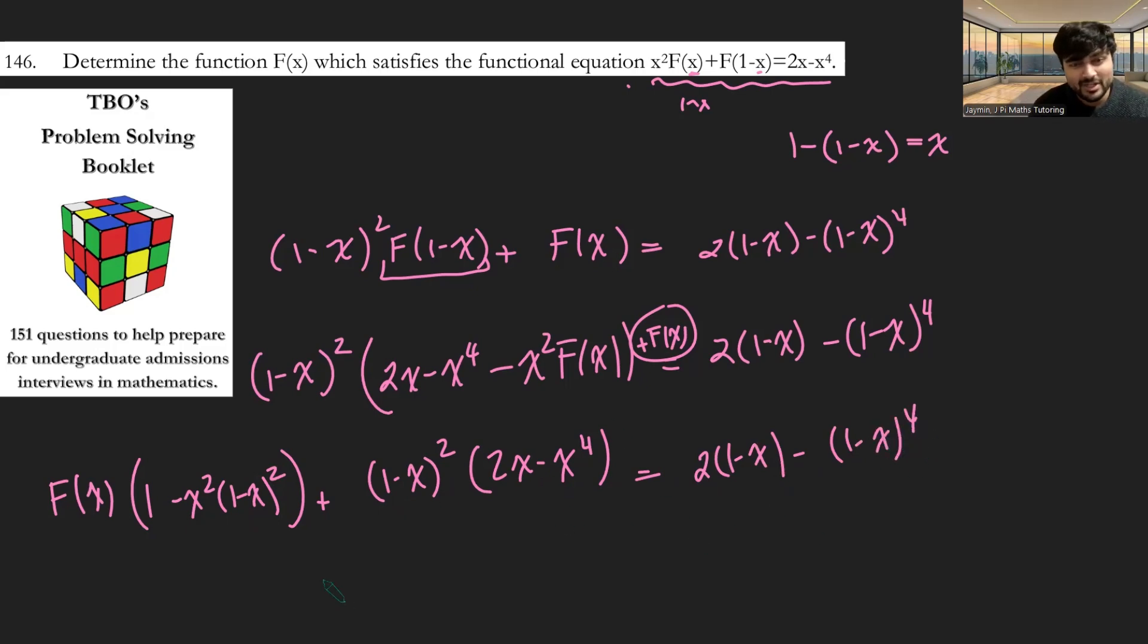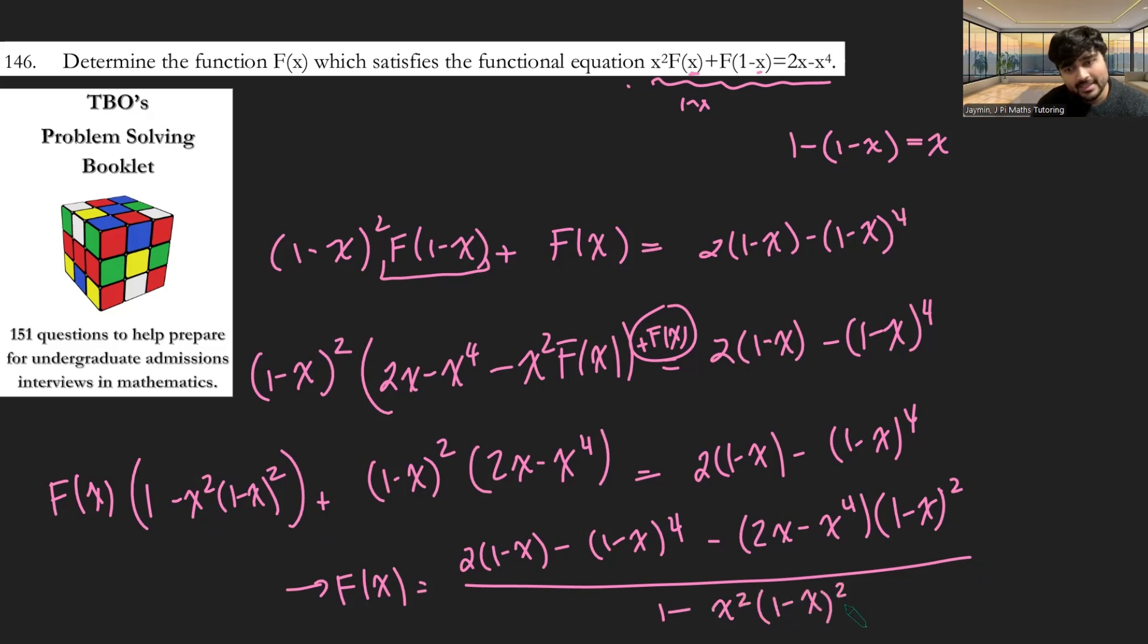And so now we just do some simple rearranging and we can just make f(x) the subject. So this is going to be 2(1-x) minus (1-x)⁴ minus this guy, which is minus (2x - x⁴) times (1-x)². And then all of this divided by this messy term here. So 1 minus x² times (1-x)², like so.